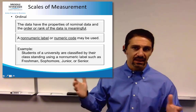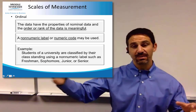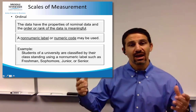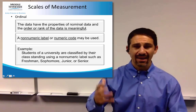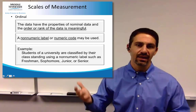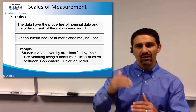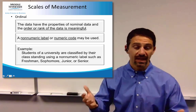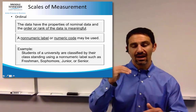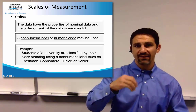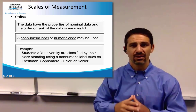It becomes ordinal when you can take those categories and put them in order. A great example: economics, finance, and marketing are nominal data, but freshman, sophomore, junior, and senior is ordinal data because it's categories I can rank one after the other. I can't really tell the exact difference between a senior and a junior other than roughly 30 credit hours. When you have categories where some are higher than others — for example, dislike, neutral, and like — we know there's a difference, but not how much. That's ordinal data.